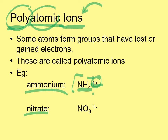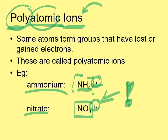Most polyatomic ions we'll look at are negatively charged. For example, one nitrogen and three oxygens can form a group together — and we know it's an ion, not a molecule, because it has a charge. This is the nitrate ion: one nitrogen, three oxygens, with a charge of negative one. Polyatomic ions have specific names, and it's important to always include the charge when writing them in square brackets.